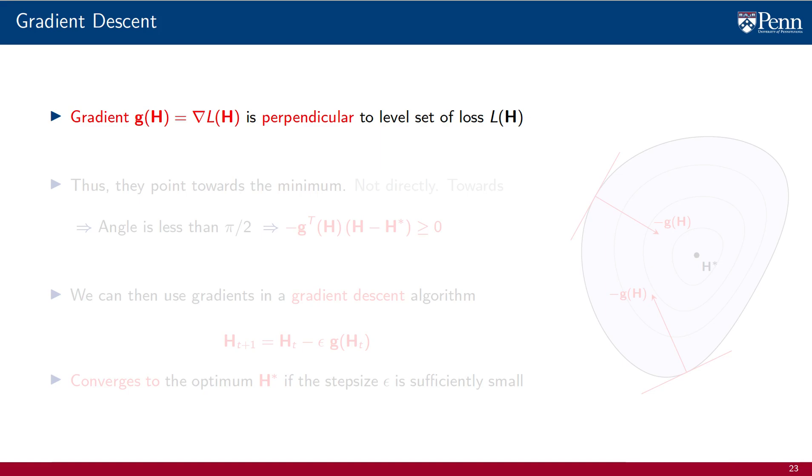Gradient descent, not surprisingly, uses gradients. The property that gradients have that makes them useful in finding a minimum is that they are perpendicular to the level sets of the loss. Please notice the introduction of notation here. We use g of h to denote gradients of the loss L evaluated at parameter h.